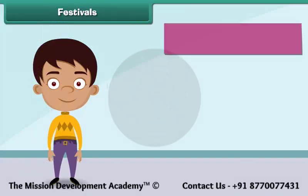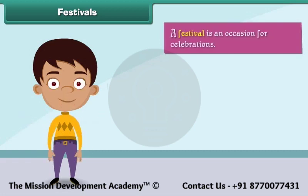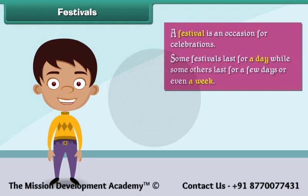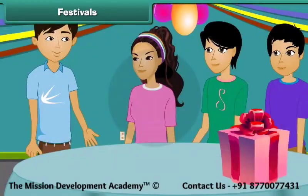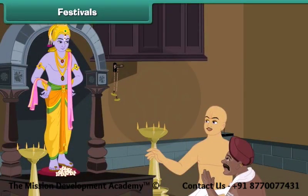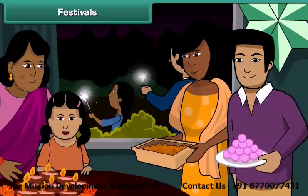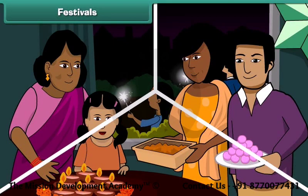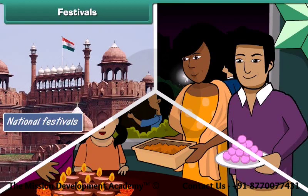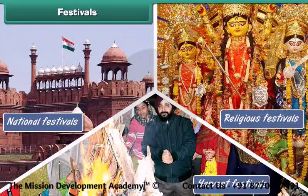A festival is an occasion for celebrations. Some festivals last for a day, while some last for a few days or even a week. Festival times are happy times. During a festival, we clean and decorate our houses, wear new clothes, pray to God, exchange gifts with friends and relatives, and enjoy delicacies. Festivals can be broadly classified into three categories: national festivals, religious festivals, and harvest festivals.